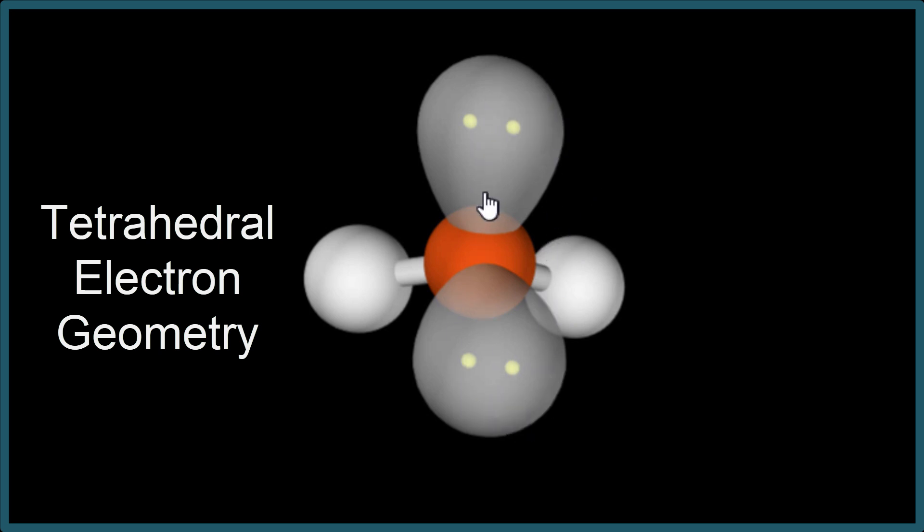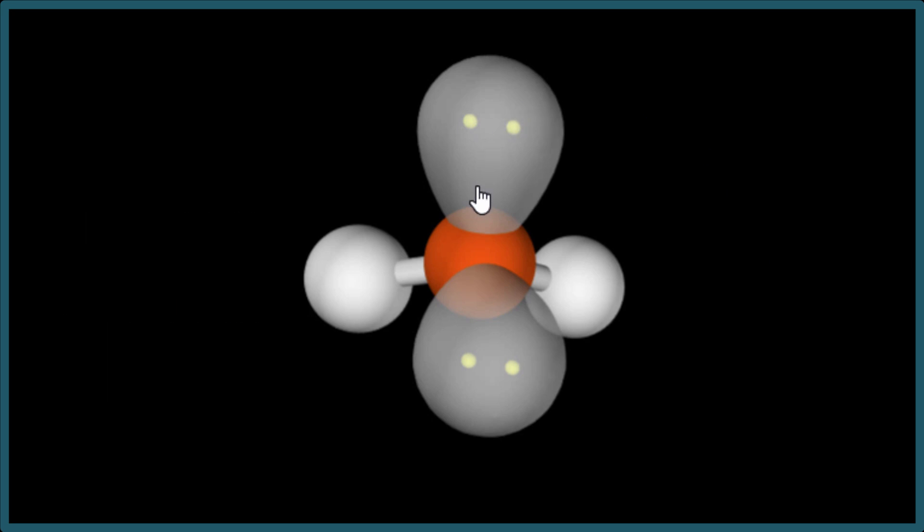Because we're considering these electrons now, the geometry is no longer just bent. We're considering everything and we're saying that it's tetrahedral. So the electron geometry for water is tetrahedral.